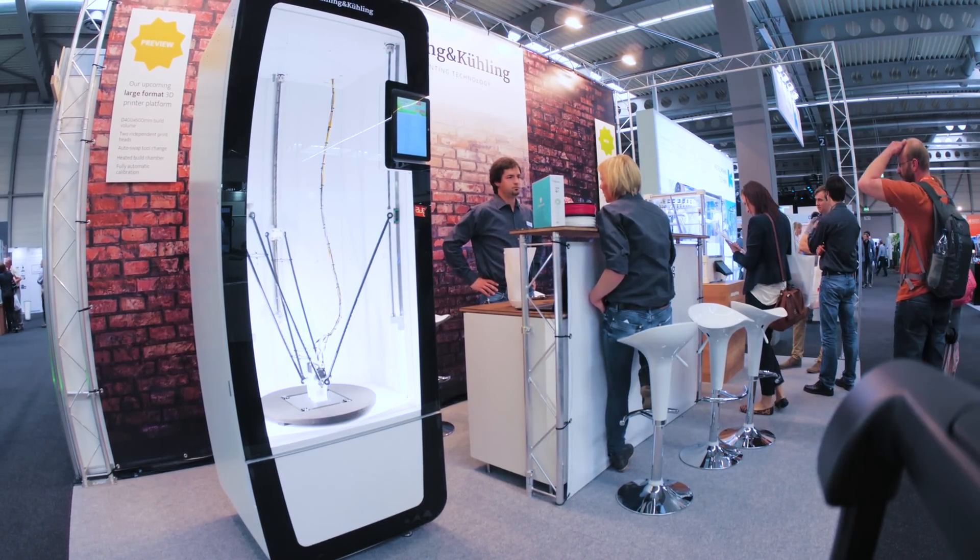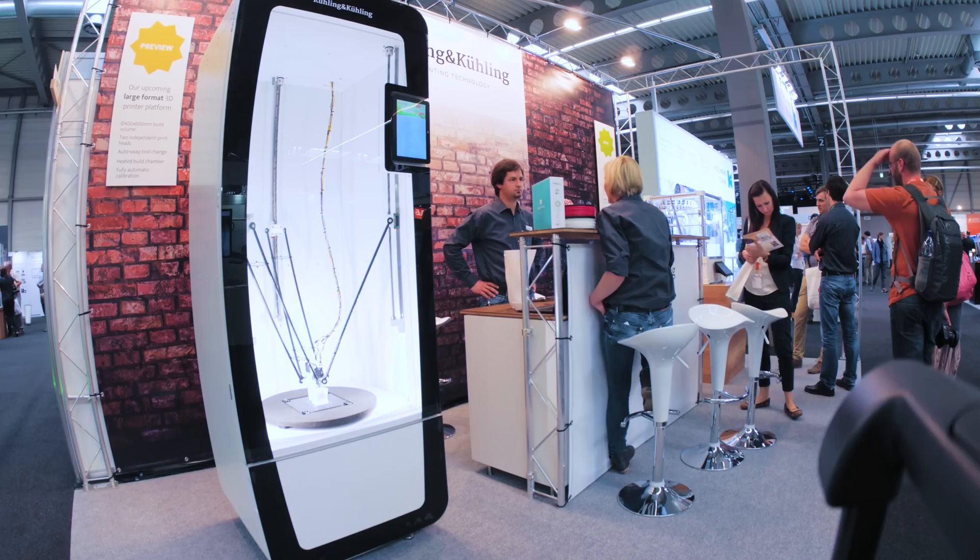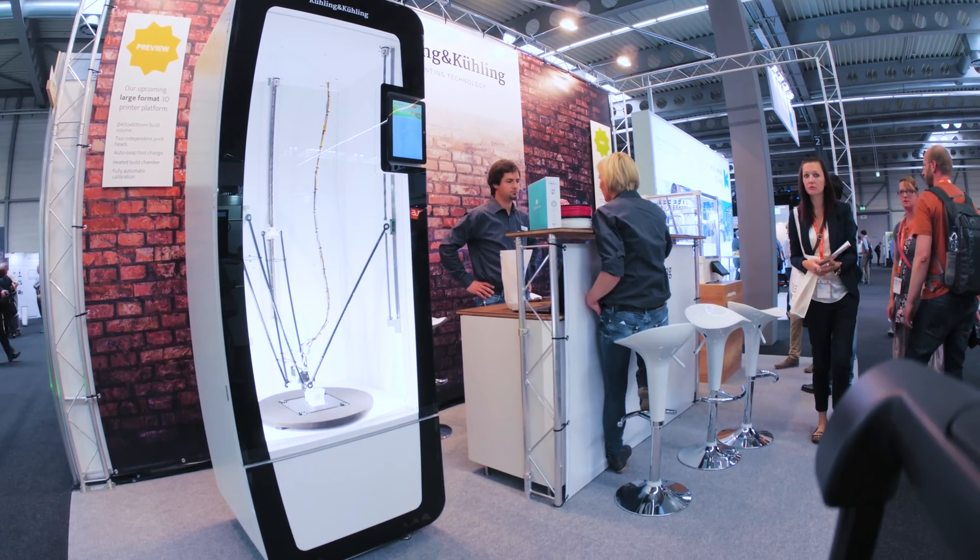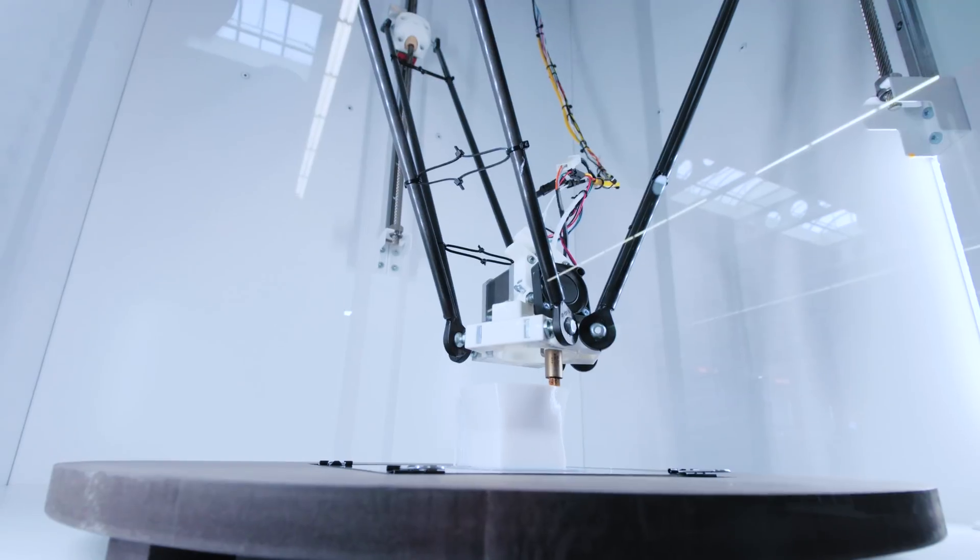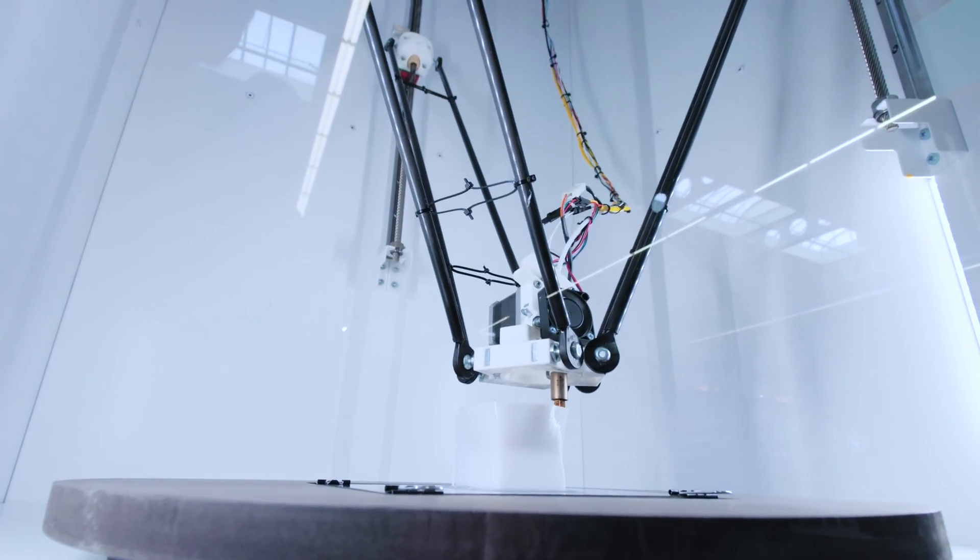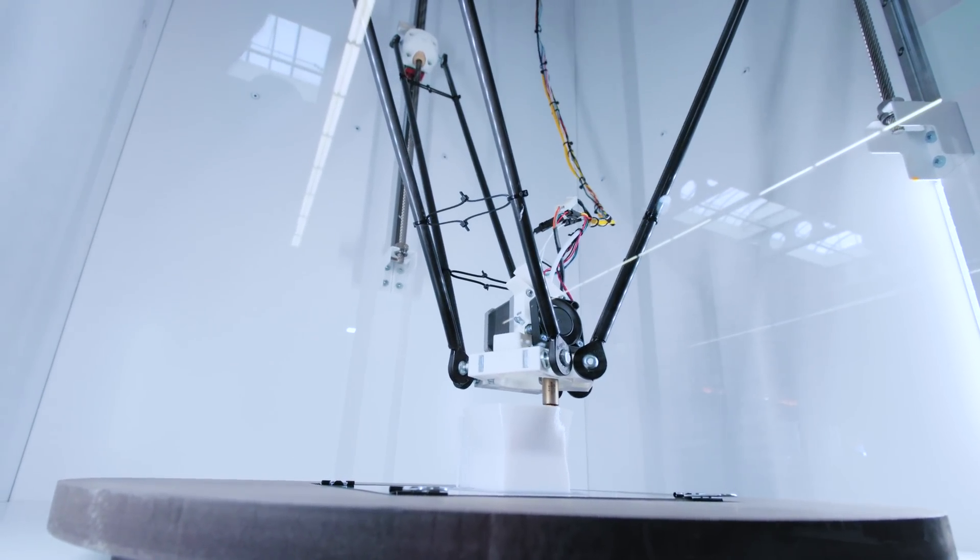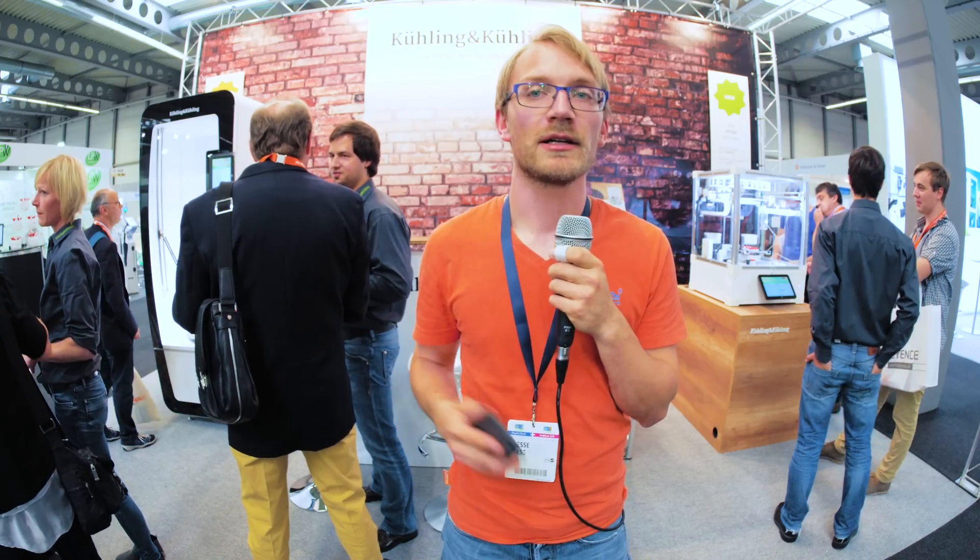So obviously the machine here is still a very early prototype, but you can see the direction they're heading in. Gone are the dual extruders, and they've instead replaced them with a swappable tool head that will be integrated into the machine itself and be able to swap tool heads, extruders, hot ends, whatever you've got in there during a print.